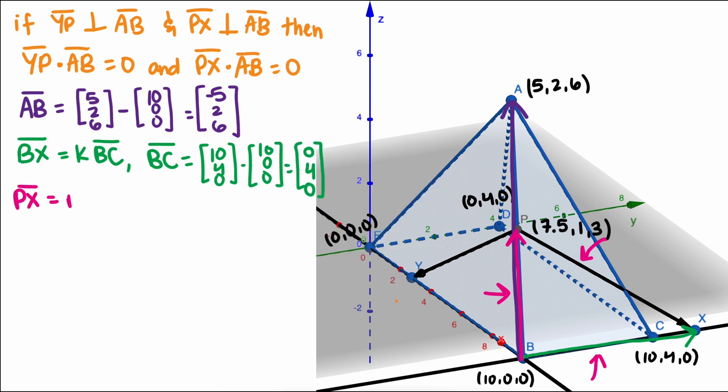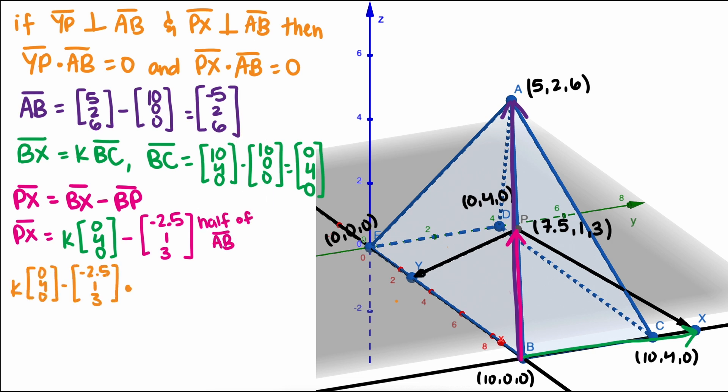There are multiple ways to express this relationship, but since we're trying to find PX, we'll write it like this. PX is the difference between BX and BP. Plugging in the expressions we already found for BX and BP, we now have an expression for PX that we can plug back into our orthogonal dot product from the beginning and solve for K.